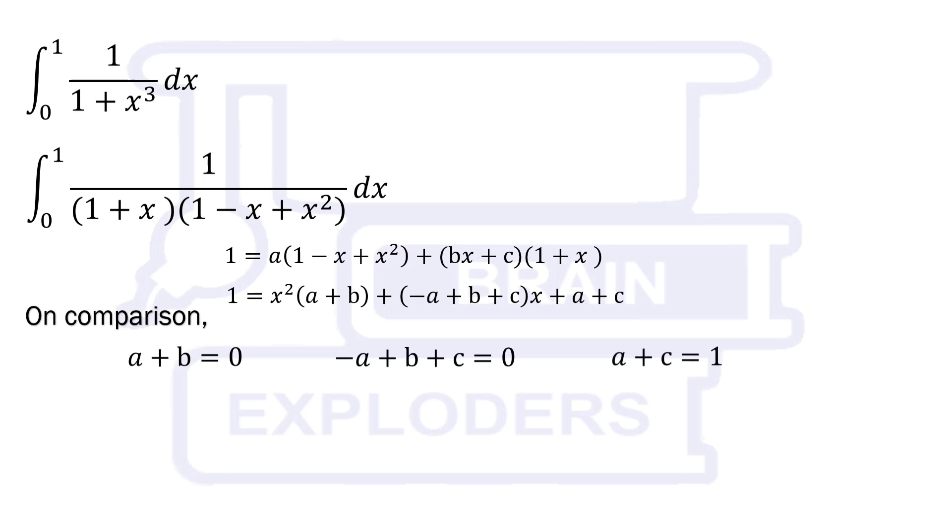On comparison, we get a plus b equals 0, minus a plus b plus c equals 0, and a plus c equals 1.